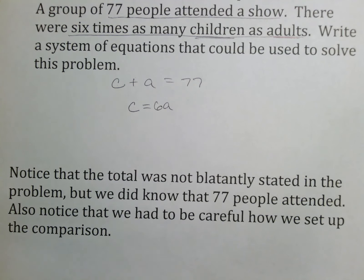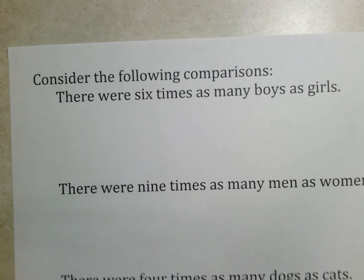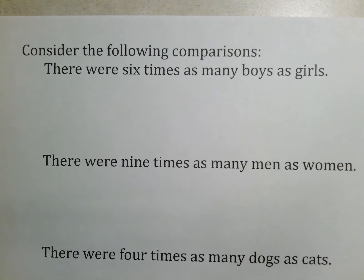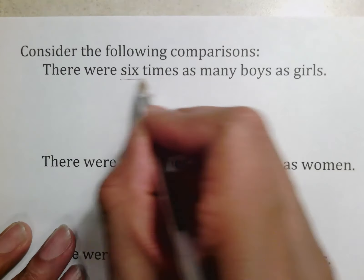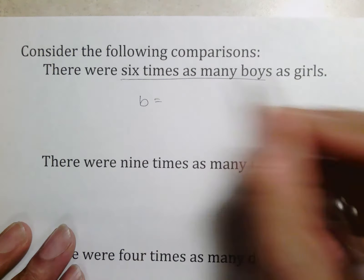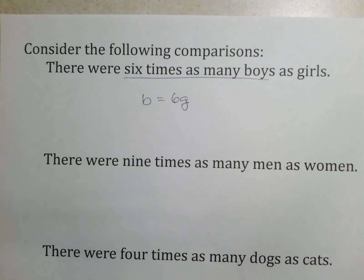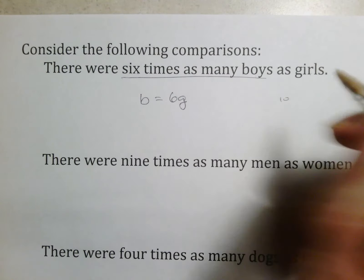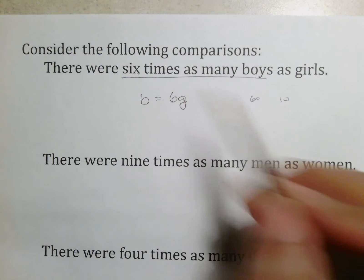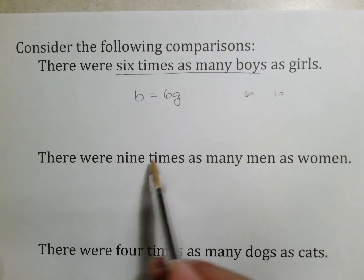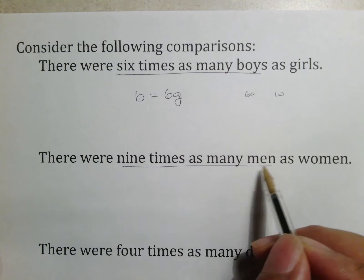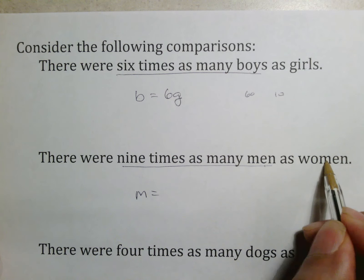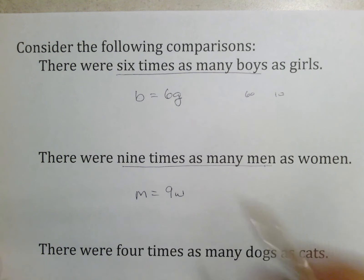There will be Math XL questions like this, meant to build your skill. If you're having issues, come up so I can talk you through it. 'There are six times as many boys as girls' means more boys, so b = 6g. 'Nine times as many men as women' means m = 9w. 'Four times as many dogs as cats' means more dogs, so d = 4c. Make sure to use variables that make sense.